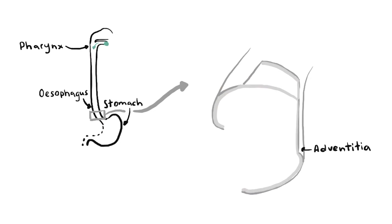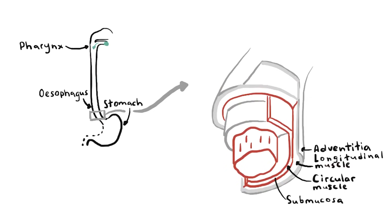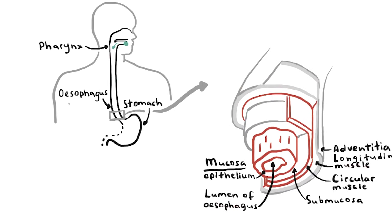two muscular layers—an outer longitudinal layer and an inner circular layer—a submucosa, a mucosa consisting of non-keratinized stratified squamous epithelium, which is continuous with the columnar epithelium of the stomach.